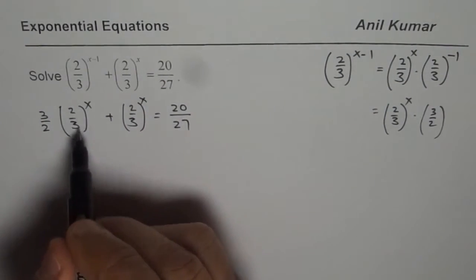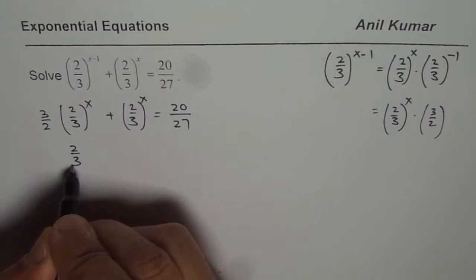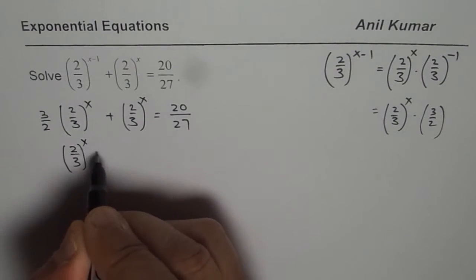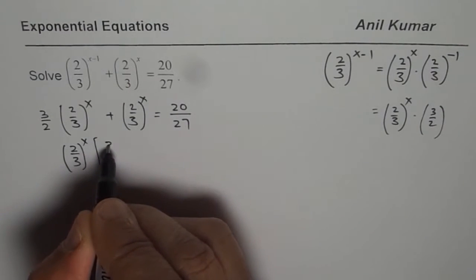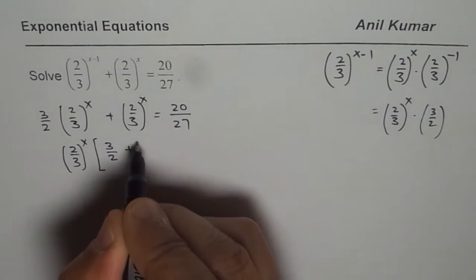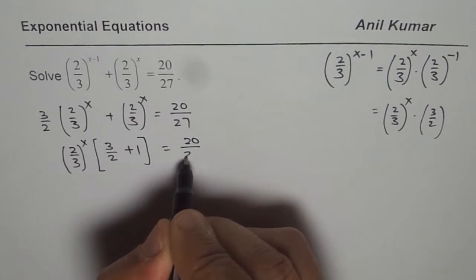Now we can take 2 over 3 to the power of x common. We get 2 over 3 to the power of x and when we take common, we get 3 over 2 plus 1 and that is equals to 20 over 27.